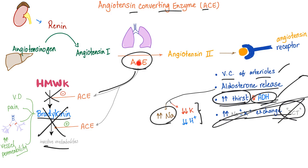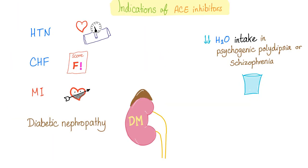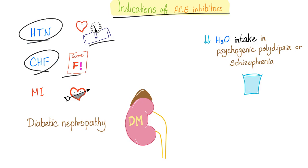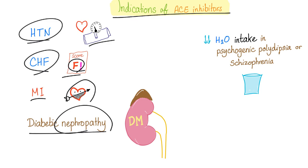What do ACE inhibitors do? ACE inhibitors will treat hypertension, absolutely. They increase natriuresis and cause hyperkalemia as well as acidosis. Indications of ACE inhibitors — when should we use them? For hypertension, big time, CHF (congestive heart failure), myocardial infarction, and diabetic kidney disease, also known as diabetic nephropathy.